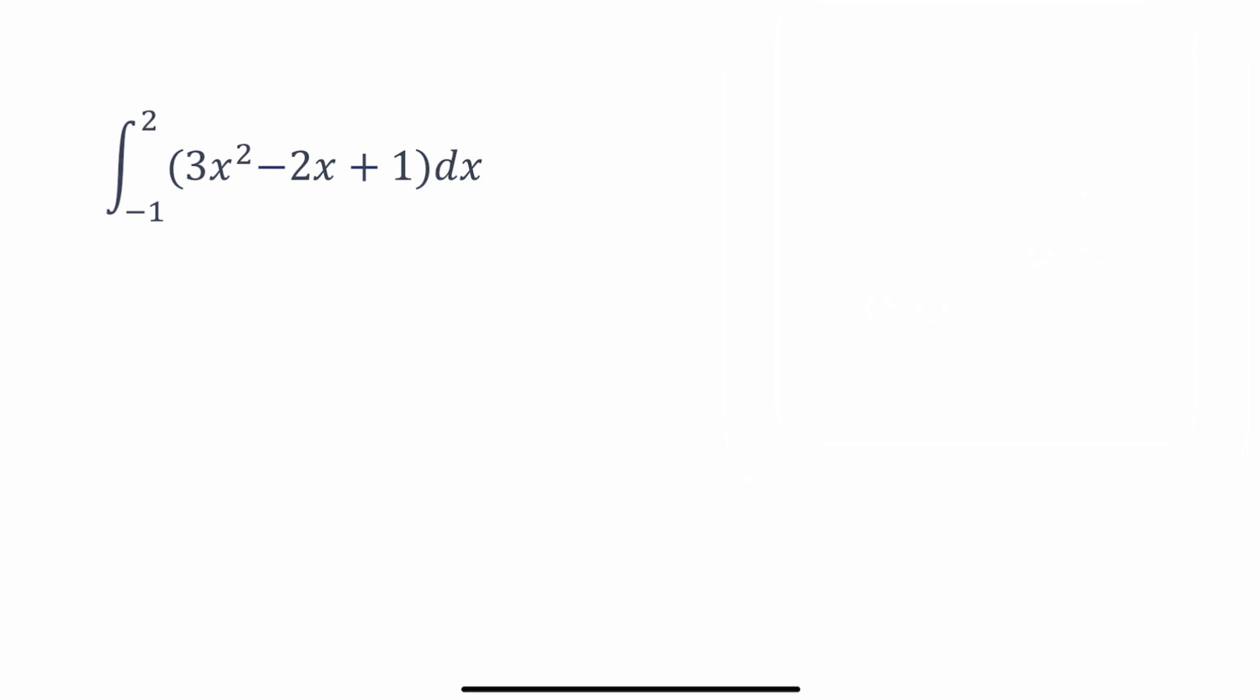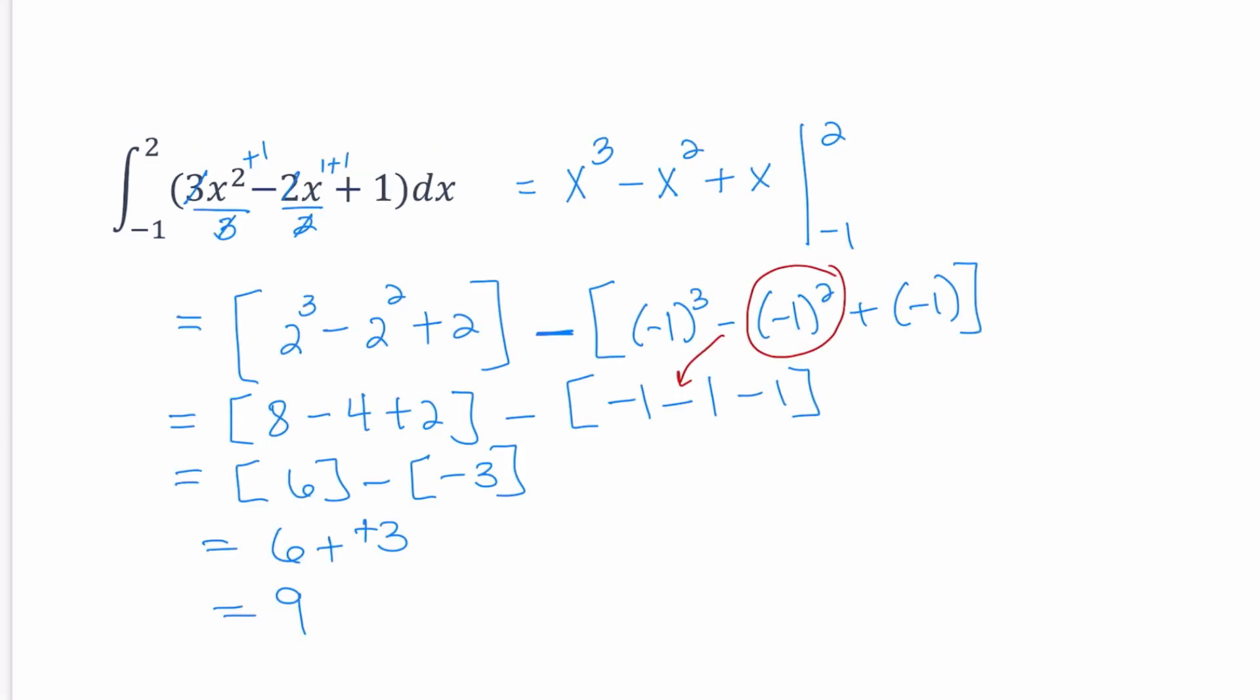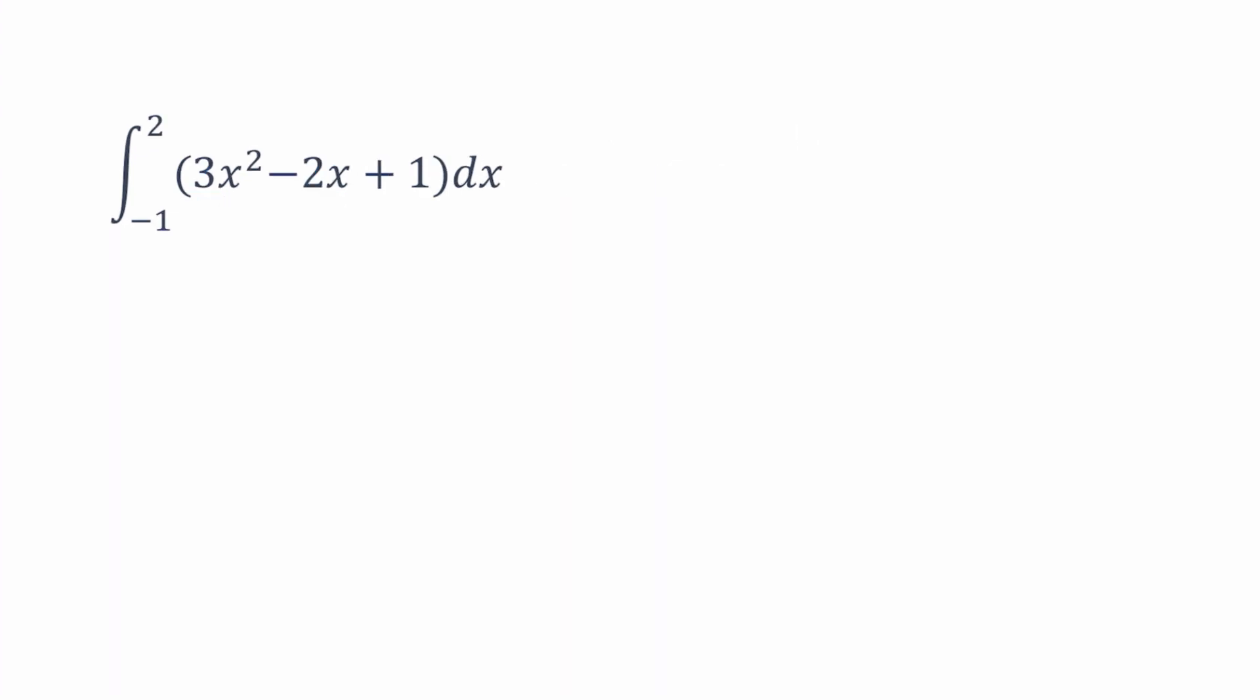Okay so we're going to go ahead and try this process one more time with another problem that we already know the answer to. In this case we're finding the integral from negative 1 to 2 of 3x squared minus 2x plus 1 with respect to x that's dx and when we did this last time our answer is 9 and so what that basically means is that the area under the curve for that quadratic function is going to be 9 between negative 1 and 2 because that's the interval that we are given.